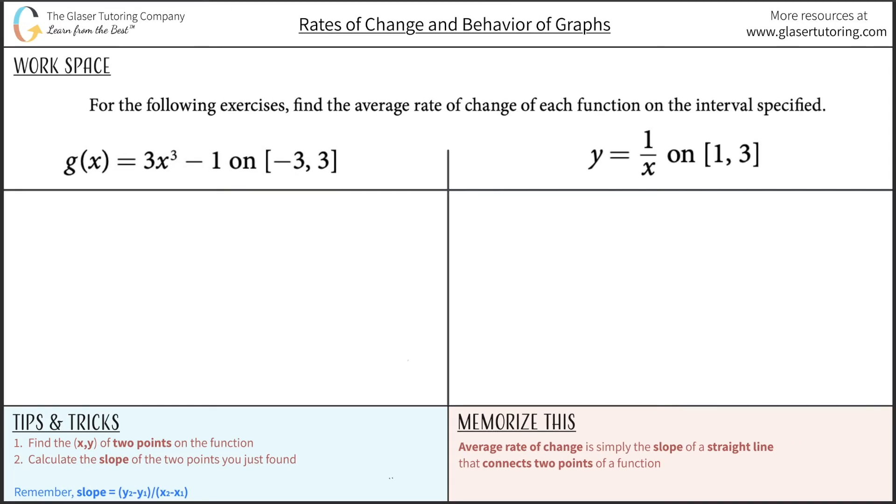For the following exercises, find the average rate of change of each function on the interval specified. The first thing is you want to interpret this term as meaning the slope. The average rate of change of a function is indeed the slope. Well, the slope of what? The slope of the function or the slope of two points that are on that particular function.